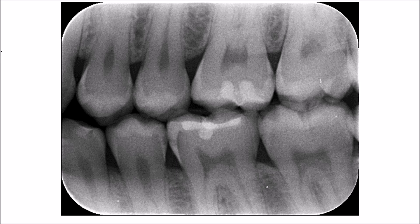Shifting to the mesial surface of the lower second premolar, by tracing the periphery of the enamel you don't see any discontinuity, and the same goes for the distal surface of the lower premolar. So we assume that these teeth at this time are free from caries.